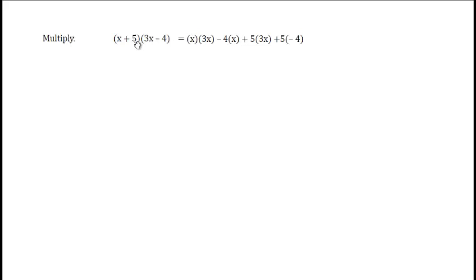Then, the inside two, positive 5 and positive 3x. Positive 5 times 3x. Then, the last two, positive 5 times negative 4.